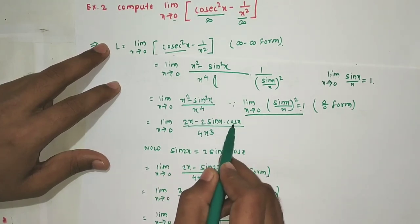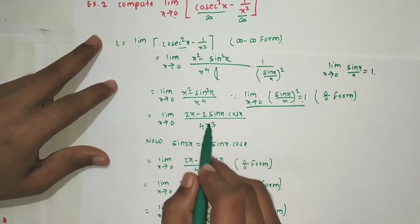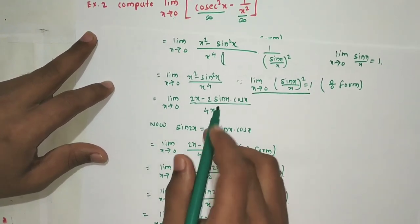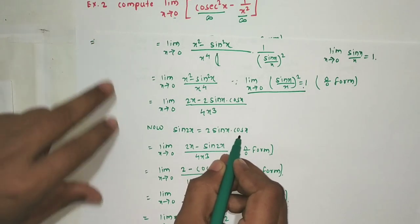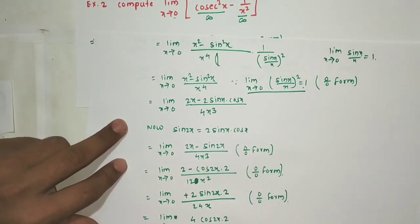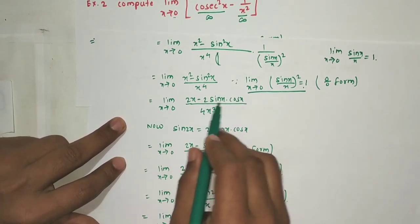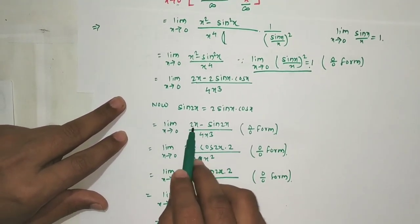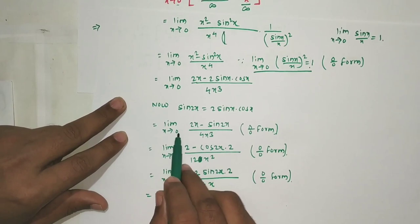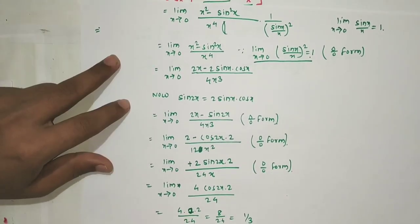Using the double angle formula sin(2x) = 2sin(x)cos(x), we get [2x - sin(2x)] / 4x³. Putting x=0: numerator = 0 - sin(0) = 0, denominator = 0. So this is again 0/0 form, and we apply L'Hôpital's rule again.